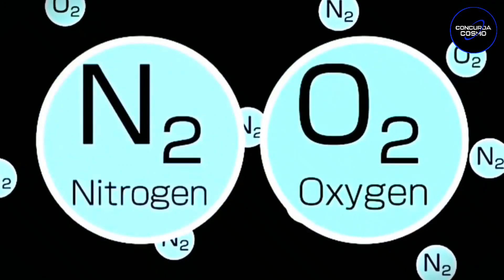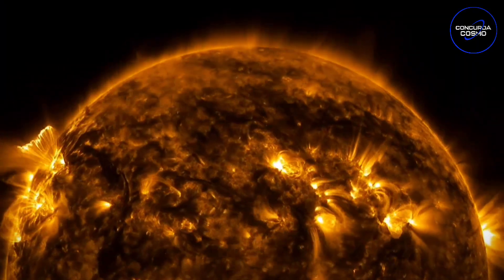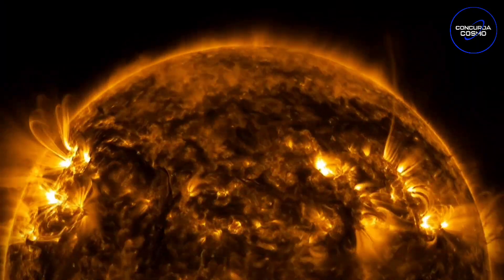Mixed in there are particles. Light comes from the sun — white light. People say the sun is yellow, but it's white.